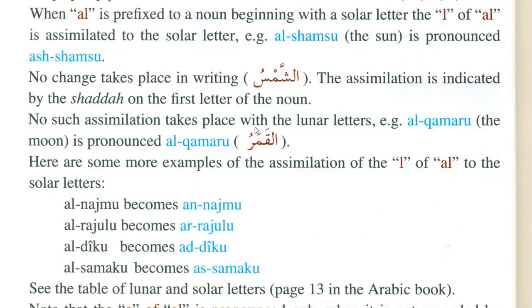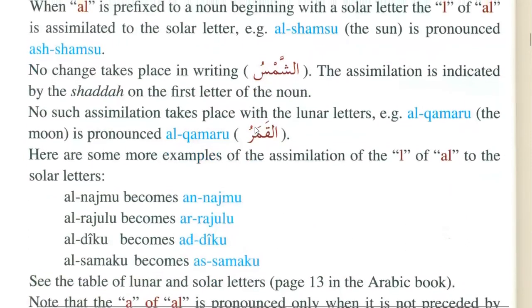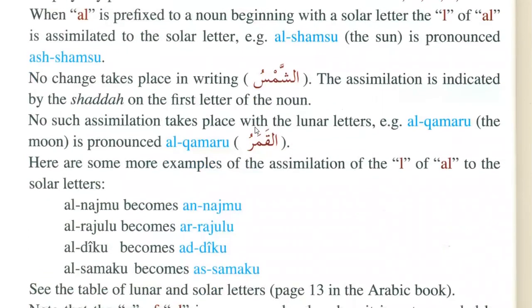Example: Al-Qamar — the moon — is pronounced Al-Qamar. Here are some more examples of the assimilation of the Lam of Al to the Solar letters.